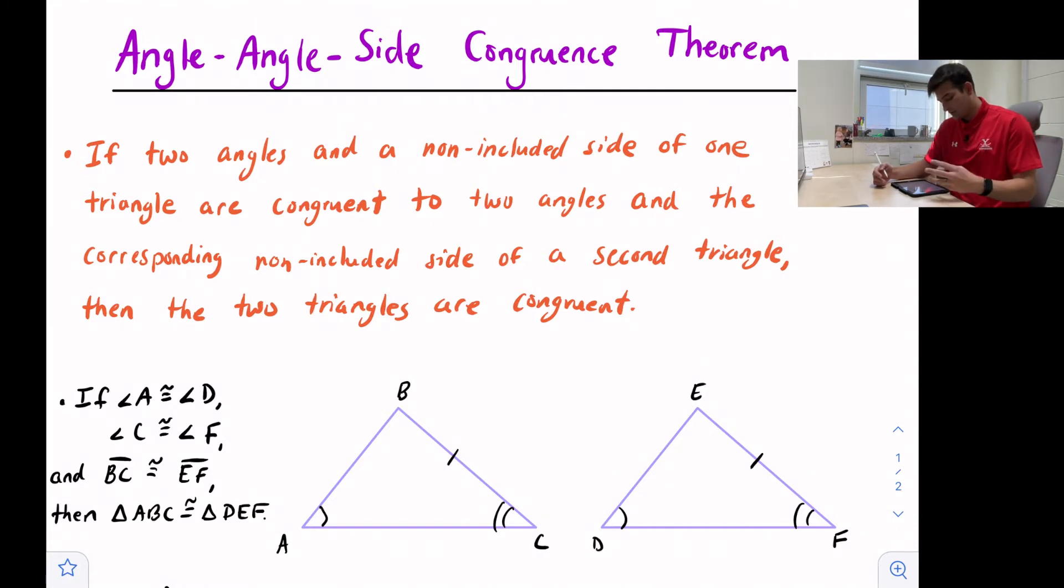So we have a diagram here. We have triangle ABC and triangle DEF, and there's some conditions over here on the left. It says if angle A is congruent to angle D, so we see that right here, those two angles, and if angle C is congruent to angle F, so there's our two angles, right, angle-angle.